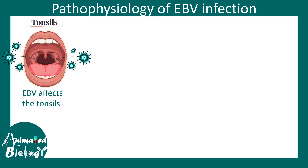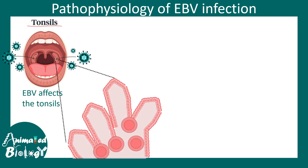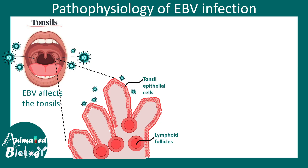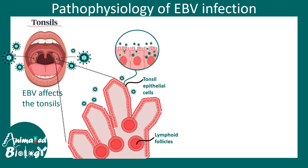The virus affects the tonsils. Looking at a zoomed view of the tonsils, there are tonsillar epithelial cells and lymphoid follicles. The virus can primarily affect these tonsillar epithelial cells, and eventually the B cells sitting in the lymphoid follicles can also get affected.